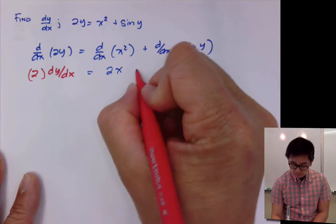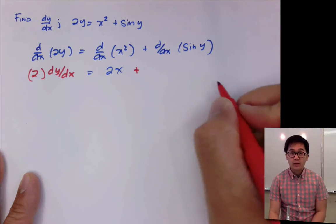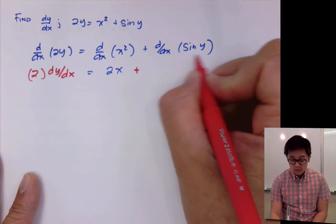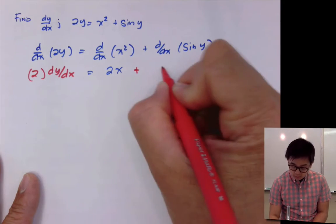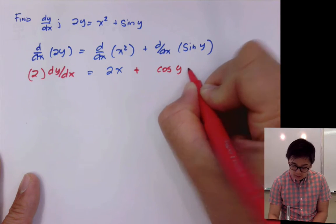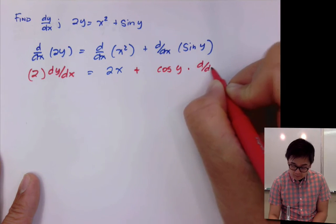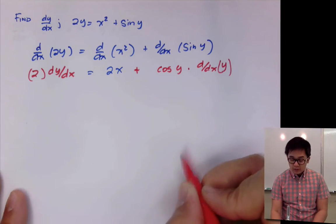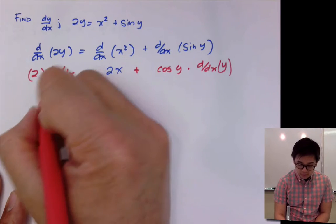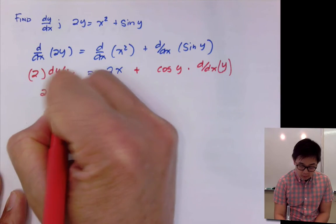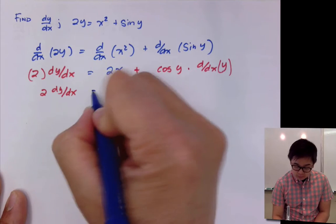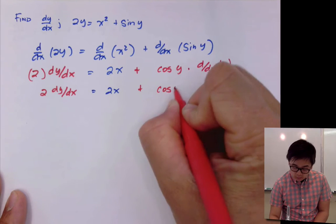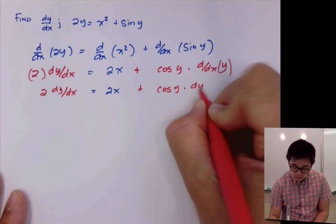For the third term, since we are working with a function of y, we'll use implicit differentiation again. The derivative of sine y is cosine y, so we have cosine y times the derivative of the inside, which is y. Using the chain rule, we'll simplify this: 2 dy/dx equals 2x plus cosine y dy/dx.